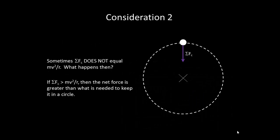Consideration two. Sometimes the net force does not equal mv² over r. What happens then? If the net force is greater than mv² over r, then the net force is greater than what is needed to keep it in a circle, and this will result in the object spiraling inward.